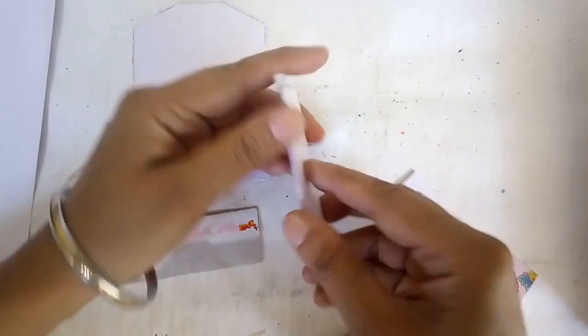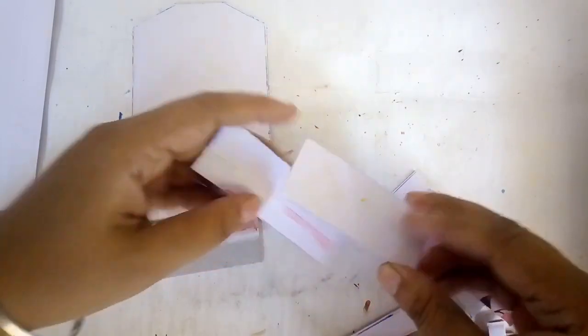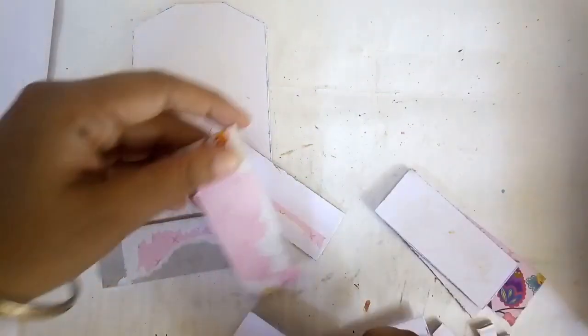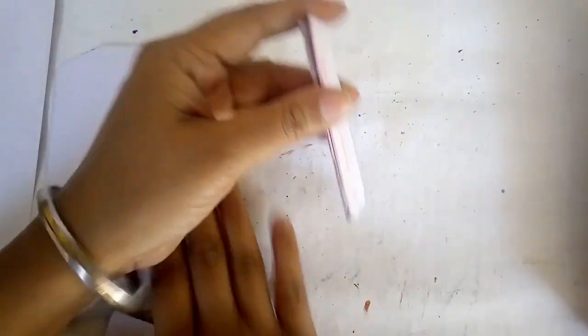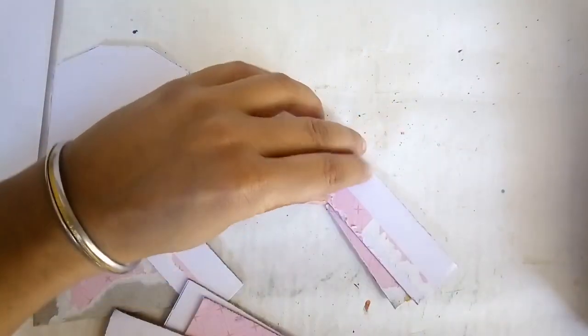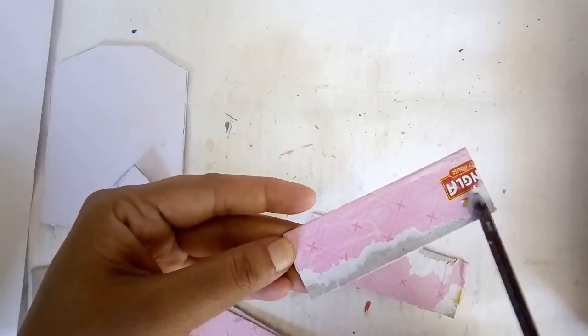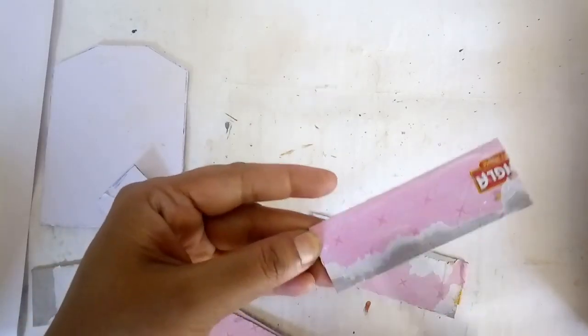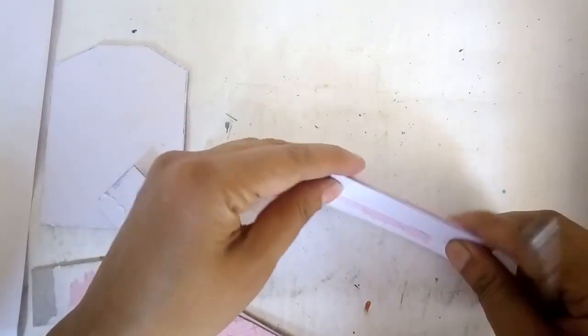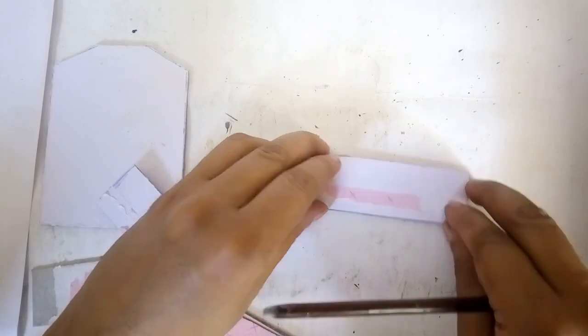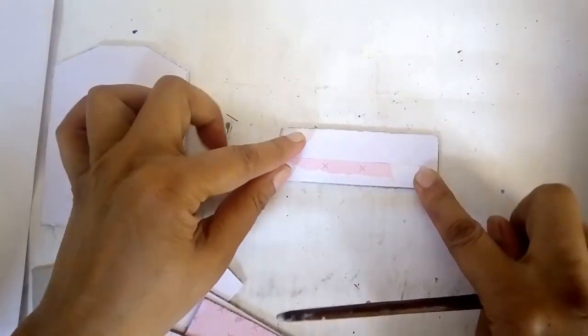I'm using PVA glue for this. Spread it evenly in thin coat, put the two pieces together and then lay them flat somewhere and put something heavy on top.